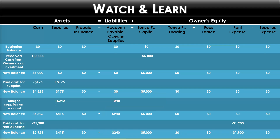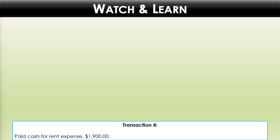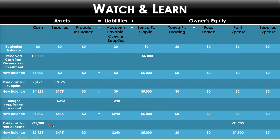Here we have added one more transaction. Transaction four: paid cash for rent expense in the amount of $1,900. We decrease cash by $1,900 and decrease rent expense by $1,900. Those are the two accounts impacted — cash and rent expense. On the next row we bring down the new balance. The new cash balance is $2,925.